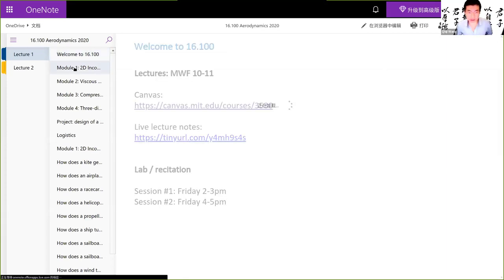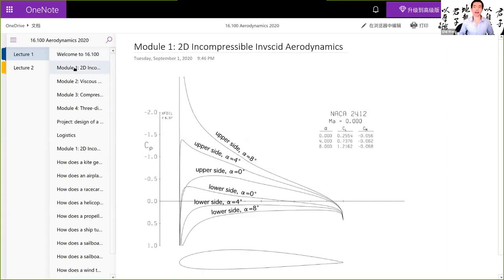So let's discuss these four modules in a little bit more detail. All four modules are titled the two-dimensional incompressible inviscid aerodynamics for module 1 and the viscous aerodynamics for module 2, compressible aerodynamics for module 3, and the three-dimensional aerodynamics for module 4.